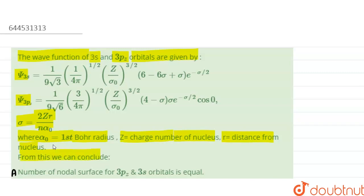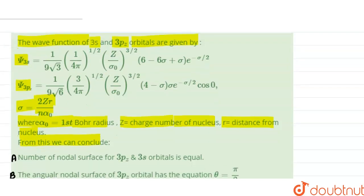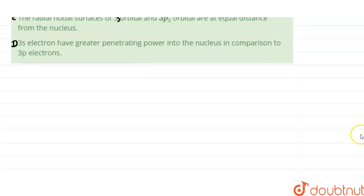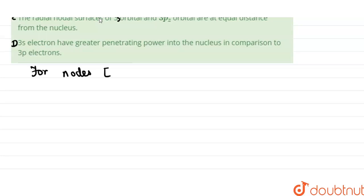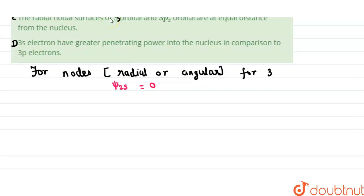From this we can conclude. Let us solve the wave function in order to find out the radial nodes as well as the angular nodes for the given orbitals. Let us consider the wave function for the 3s orbital. For nodes, whether radial or angular, our psi function psi 3s is equal to 0.